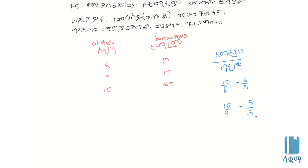If it's proportional then the ratios should match. If they're equal, they're proportional. Ten divided by six, fifteen divided by nine equals five-thirds.